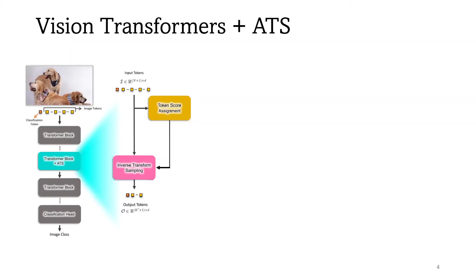Our adaptive token sampler, or ATS module, is a differentiable parameter-free module that can be added to any existing vision transformer architecture and reduce its computational complexity by reducing the number of input tokens. When adding ATS to a transformer block, we specify an upper bound for the number of sampled tokens at that specific stage, and then ATS can decide about the required number of input tokens based on the image content.